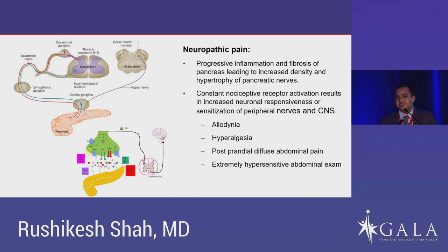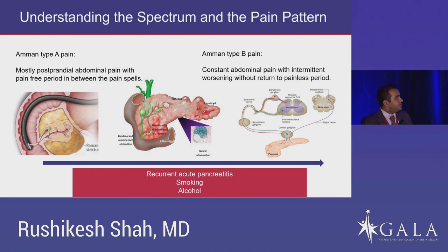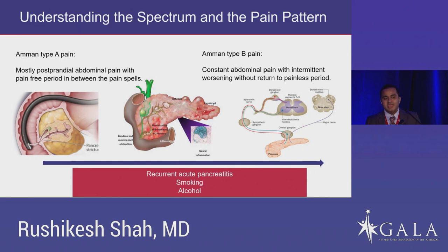When you see these patients in your clinic, it's important to put them on the spectrum of the disease. If patients are on the left side of the spectrum — earlier disease — they'll describe pain that is mostly postprandial with complete pain-free intervals. This is when endoscopy and surgery is highly beneficial. Once they progress to the later stage, they will have constant pain with intermittent worsening but never be pain-free — at which point endoscopy and surgery have limited benefit. Modifiable factors that drive progression include smoking, alcohol, and recurrent acute pancreatitis. If there's a stricture or stone, we can intervene and prevent this progression.